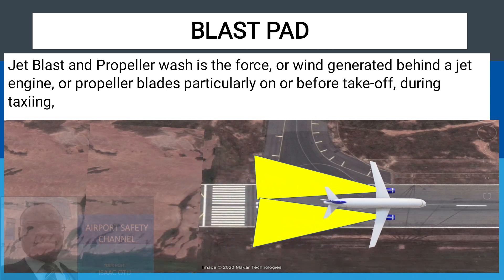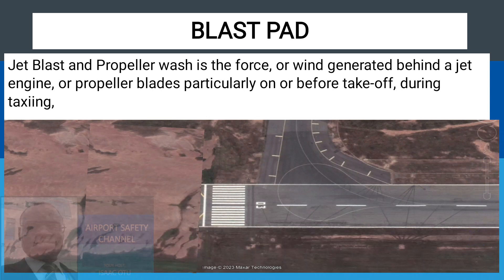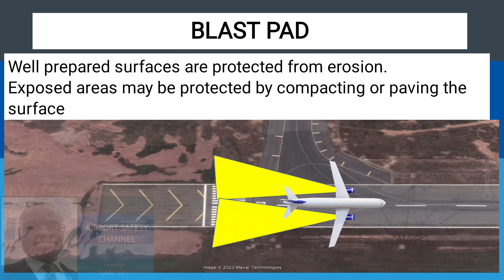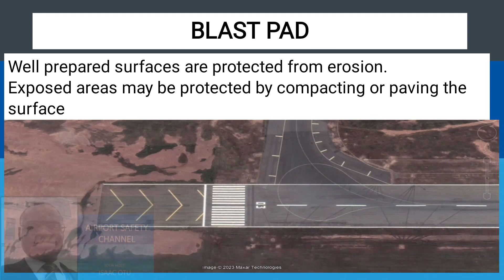Therefore, if the area is protected, the impact of the jet blasts will be reduced. Well-prepared surfaces are protected from erosion. Exposed surfaces may be protected by compacting or paving the surface. You can see that once the area beyond the runway is paved, the effect of erosion is reduced at that location.